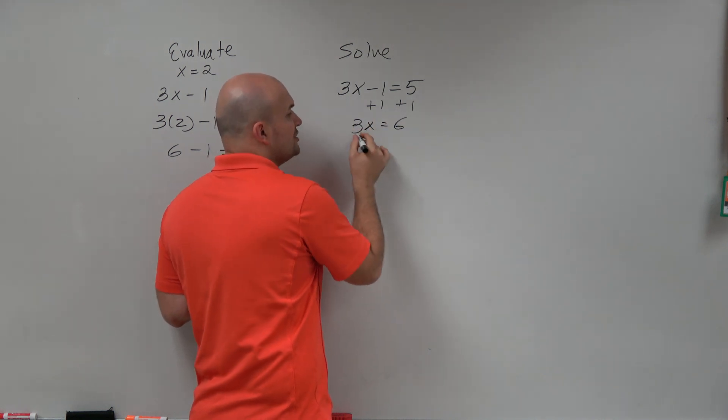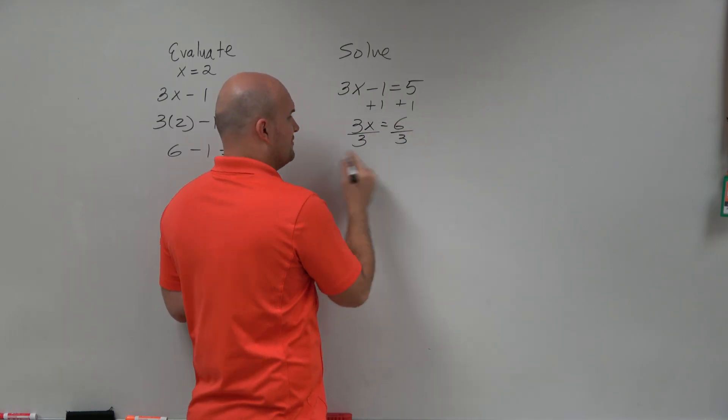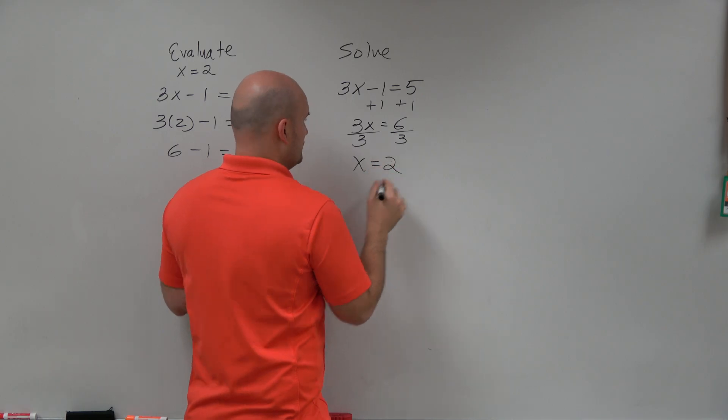Now I need to undo multiplying, so I'm going to use the inverse operation of multiplying, which is dividing. And you've got to make sure you divide on both sides, which would be the property of equality. And then x is going to equal 2.